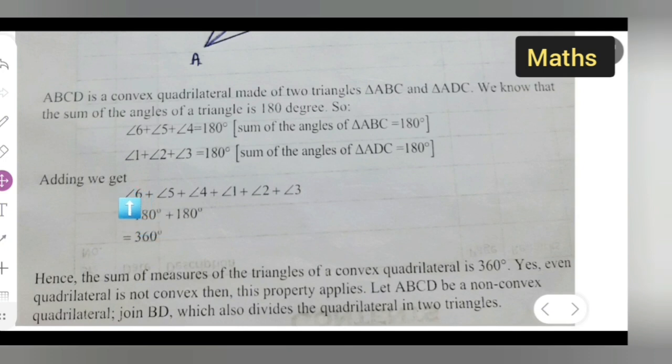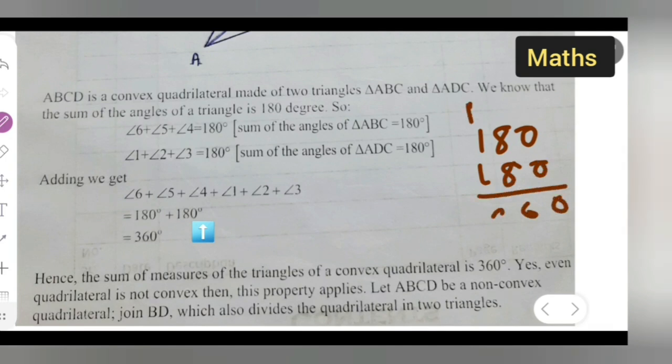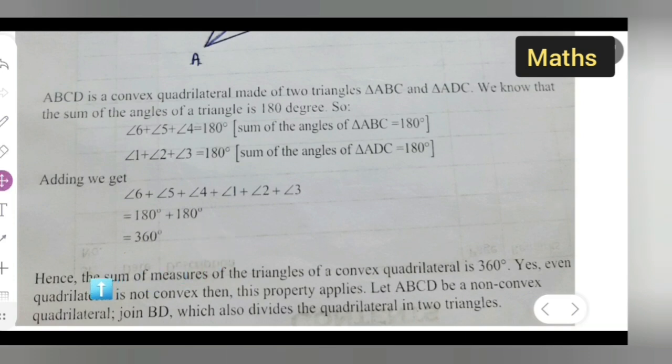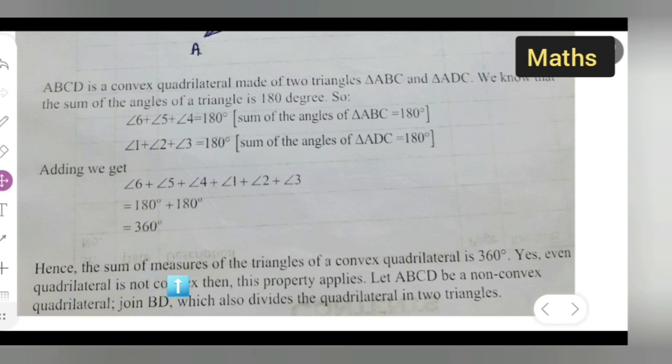Adding, we get angle 6 plus angle 5 plus angle 4 plus angle 1, 2, 3. Angles 6, 5, 4 give you 180. Angles 1, 2, 3 give you 180. If you add 180 plus 180, you will get 360. The sum of the convex quadrilateral is 360. Hence, the sum of measures of the angles of a convex quadrilateral is 360.